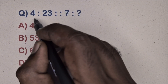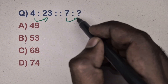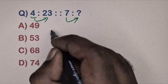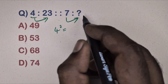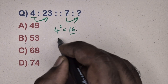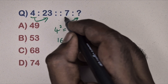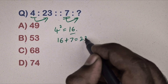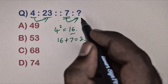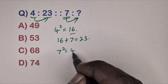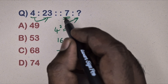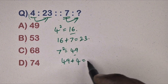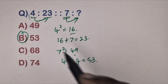Next question: 4 is related to 23, 7 is related to which number? This is also the square method. Take 4: 4² = 16, add the opposite number 7, so 16 + 7 = 23. Take 7: 7² = 49, add the opposite number 4, so 49 + 4 = 53. Option B is the correct answer.